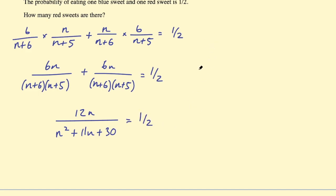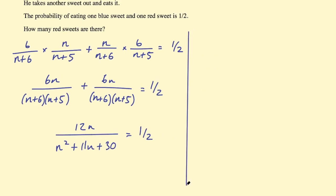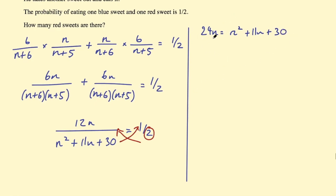And as I said, because we have the same denominator, that just stays the same and this equals a half. So let's keep simplifying this. We can cross multiply, so we can multiply this side by 2 and multiply this side by the denominators. So this comes over here and this comes up here, so we get 12n times 2, that's 24n, equals n squared plus 11n plus 30.